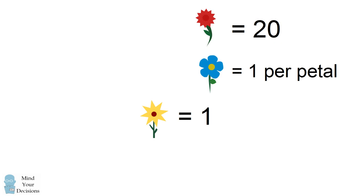Now we'll use this information to try and evaluate the last expression. The yellow flower will replace with the value of one. The red flower will replace with the value of 20. And the blue flower with four petals will replace with the value of four. We have one plus 20 times four. 20 times four is equal to 80, and we add one to get our answer of 81.